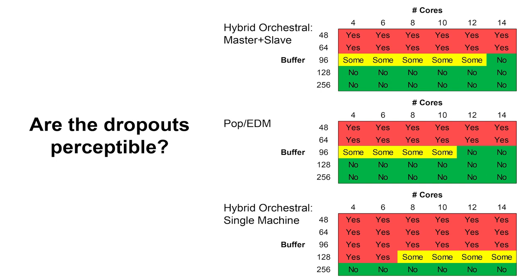For the pop/EDM track the story is very much the same: at 96 buffer there were some perceptible dropouts that might cause a hindrance; at 128 and 256 both perfectly fine; at 64 and 48 absolutely no way you'd run the project. For the hybrid orchestral on a single machine, the unworkable range extended all the way into the 96 buffer size and part of the 128 buffer size — and this is where we did see some practical advantage for core count. Moving from 6 cores to 8 cores at the 128 buffer size took the project from absolutely unworkable to maybe workable. But again, the truth is you'd probably just bump the buffer size up to 256, at which point the distinction between 4 cores and 14 cores disappears.